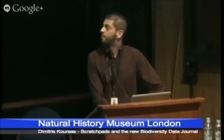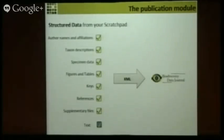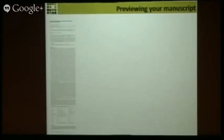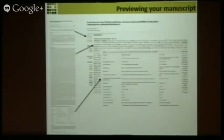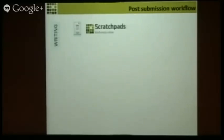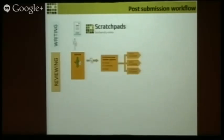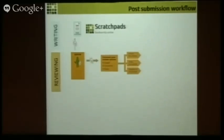Everything is compiled into a single XML file and sent for the peer review process in the Biodiversity Data Journal. What you receive before submission is a very familiar PDF-like format, so that you can see what will eventually be published. The post-submission workflow also holds new features. Once you submit your manuscript, you can decide whether you want it to go through a closed process, a community-based process, or a completely public open peer review process — it's up to you.